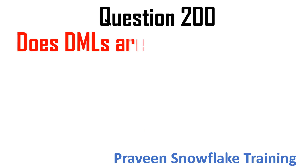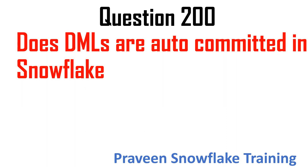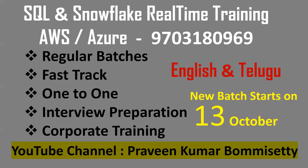Question 200: Are DMLs auto-committed in Snowflake? Yes. In a normal database like Oracle, you need to explicitly commit after a DML operation. But in Snowflake, DMLs are auto-committed by default — whenever you perform any insert or update, the data is automatically permanently stored and available across the entire database. You can verify this by checking the auto-commit parameter in SHOW PARAMETERS, which defaults to true.